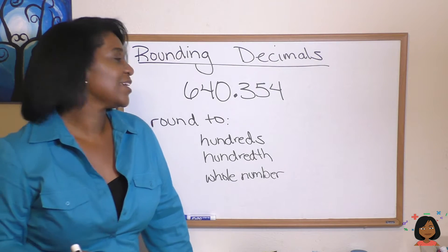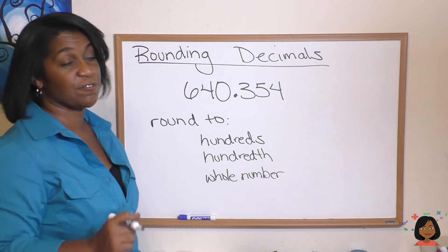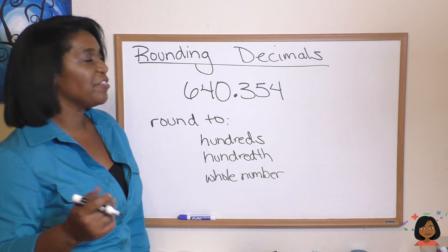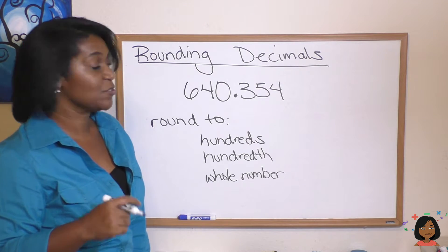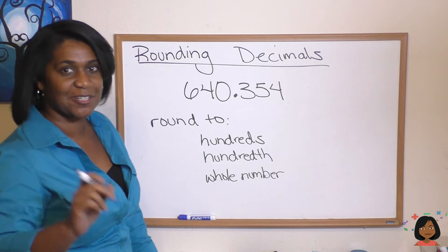Take a look at this. Here we have a number, 640 and 354 thousandths, and we want to round this to a number of different locations, or places.